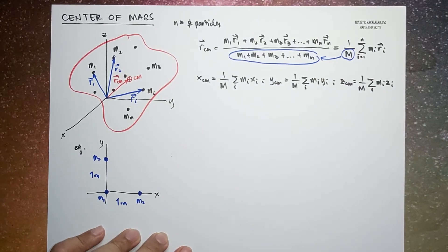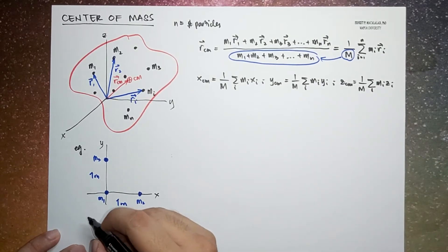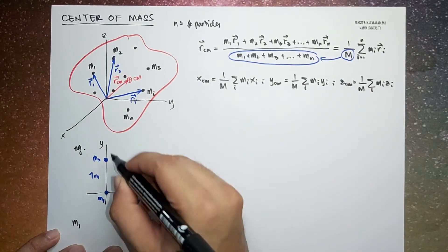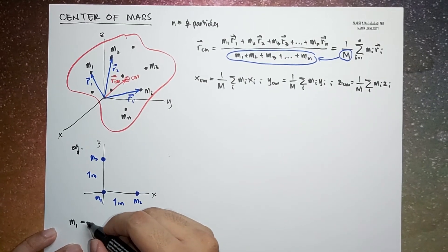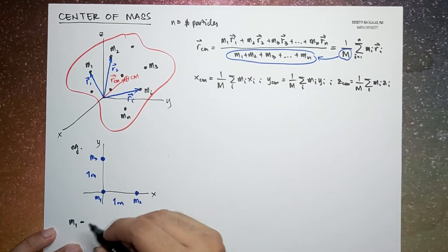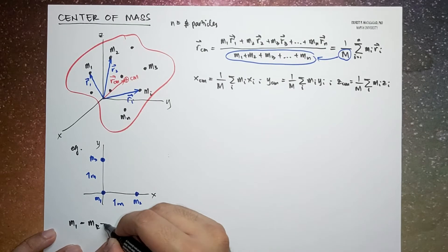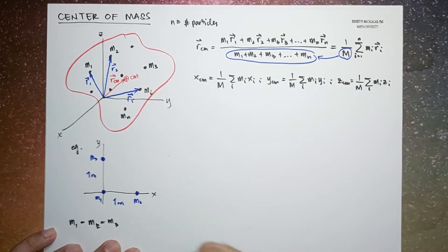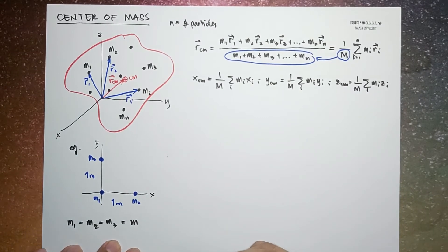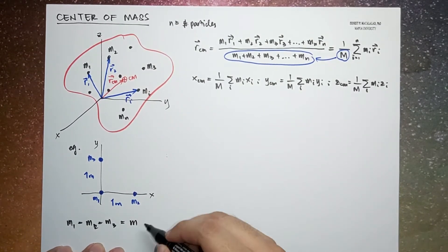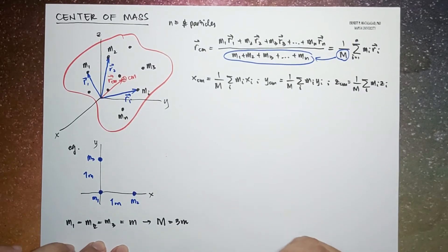The mass of each particle is equal to the others, so m1 = m2 = m3; let's call that common mass m. Therefore the total mass of the system, capital M, is equal to 3m.